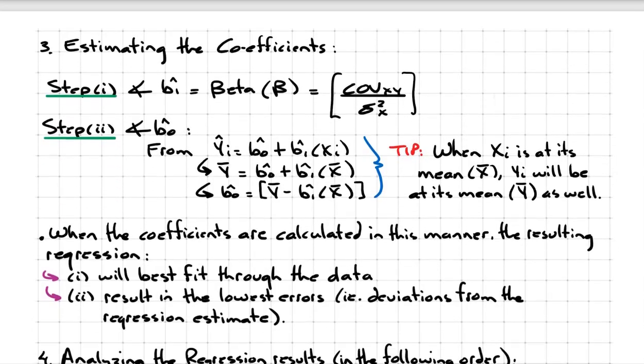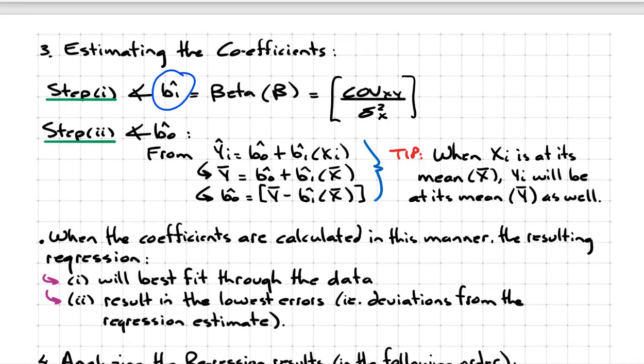The first coefficient we calculate is actually the slope coefficient, beta one. The way it's found is: it's the covariance between X and Y — the co-movement between X and Y — divided by the variance of the independent variable. This captures the sensitivity between X and Y, scaling the co-movement relative to the total variance of X.